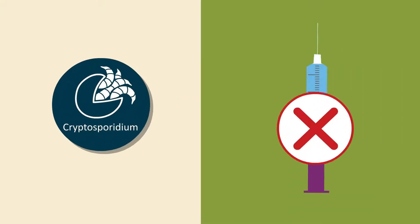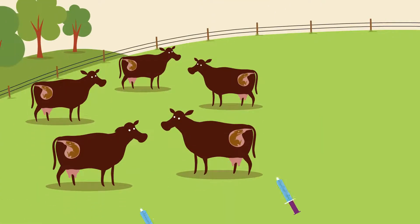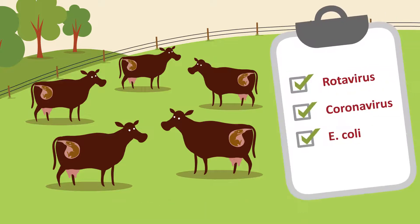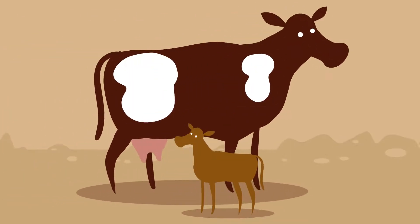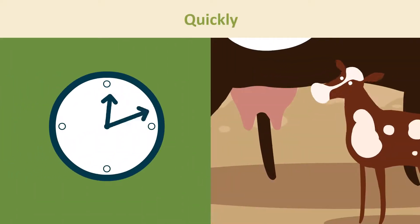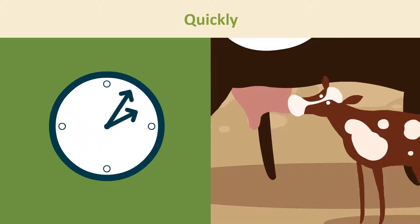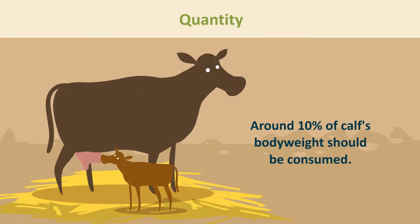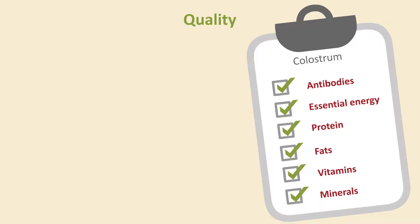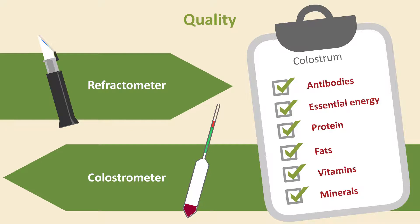As yet, there are no vaccines against crypto, but do vaccinate pregnant dams to protect calves from other scour-causing pathogens such as rotavirus, coronavirus, and E. coli. The most important thing you can do for the health of your newborn calf is to make sure it receives adequate, good quality colostrum within the first hour of birth. Ensure the three Qs are adhered to: Quickly — the calf should suckle within the first hour after birth and again in the next few hours; Quantity — around 10% of the calf's body weight should be consumed to give the calf maximum protection; and Quality — high quality colostrum is essential, and this can be measured on farm using a colostrometer or simple refractometer.